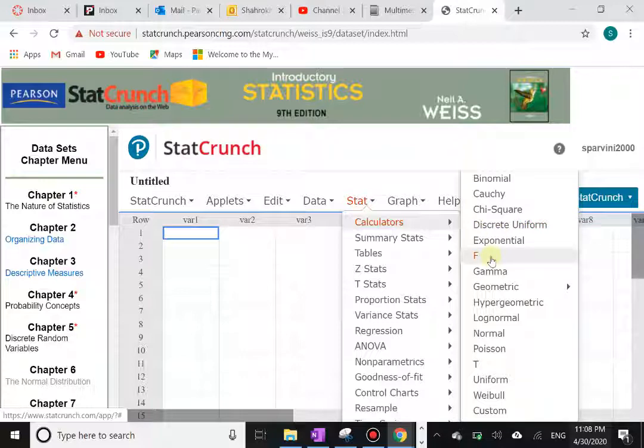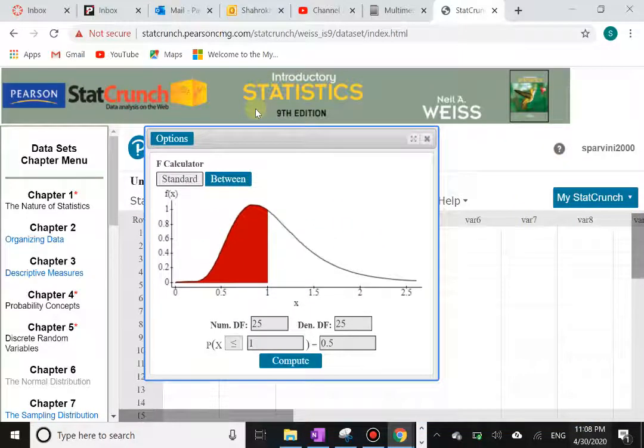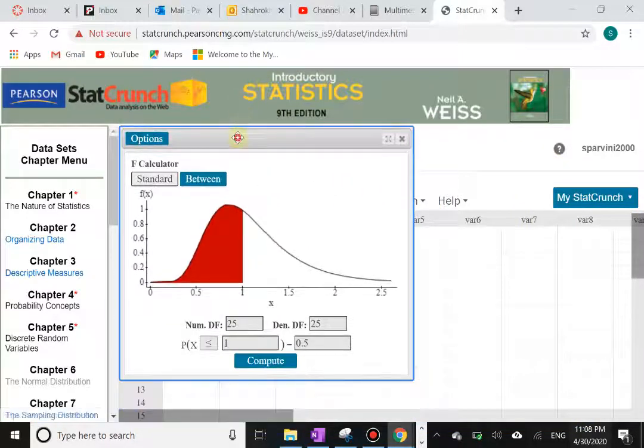There's the F distribution. So just click on letter F and you will see this distribution. Now these are the default values for degrees of freedom numerator and denominator. So we're going to change those.